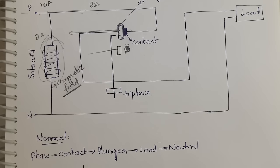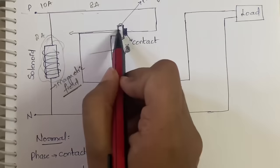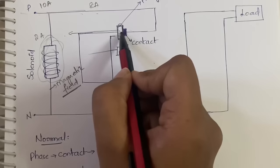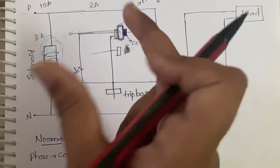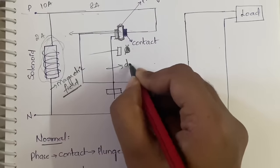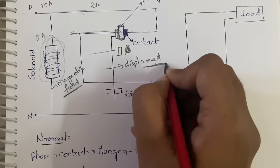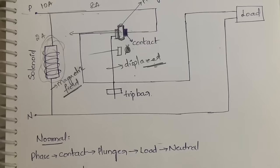Now, how does the MCB switch turn off? Both things must happen simultaneously: the circuit must become open and the switch must turn off. As the plunger moves backward toward the solenoid it hits the trip bar. The trip bar is displaced from its position, strikes the MCB switch, and the switch turns off. Again, you need to manually turn it back on to restore normal operation.